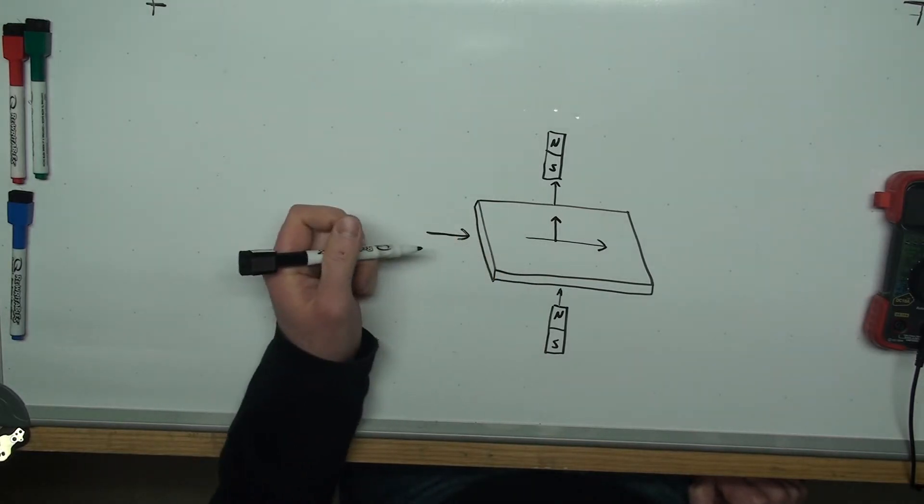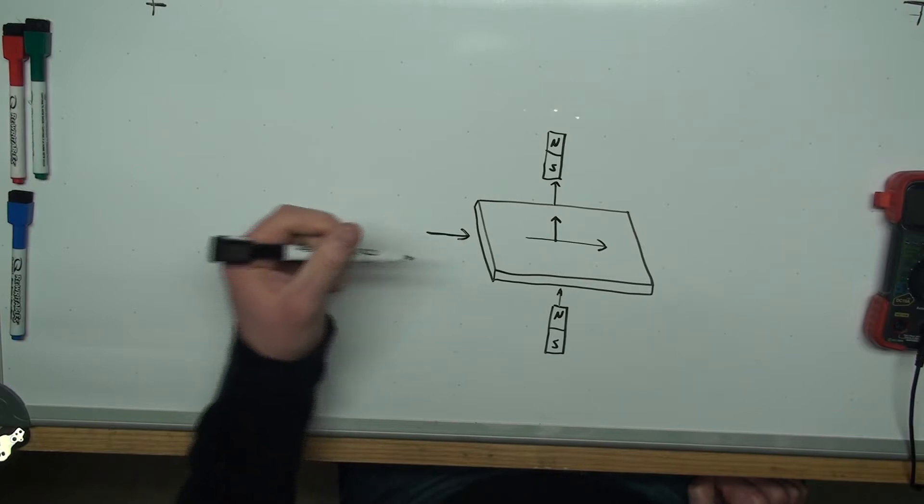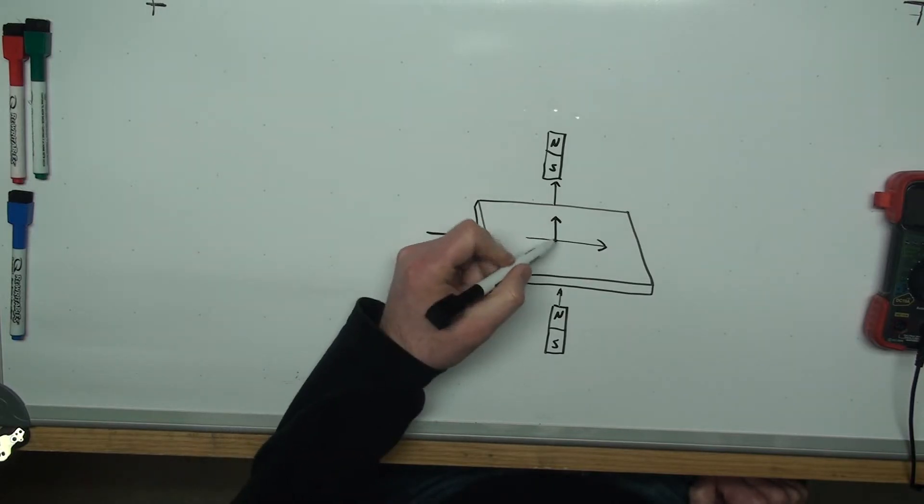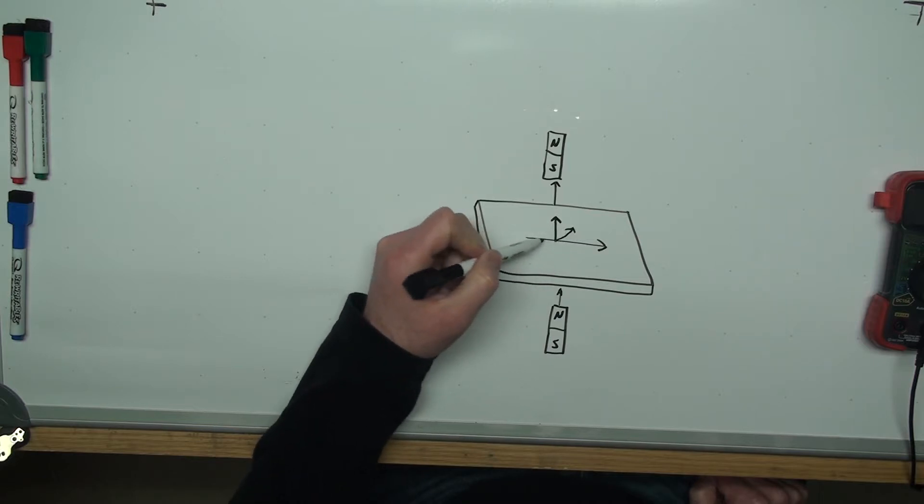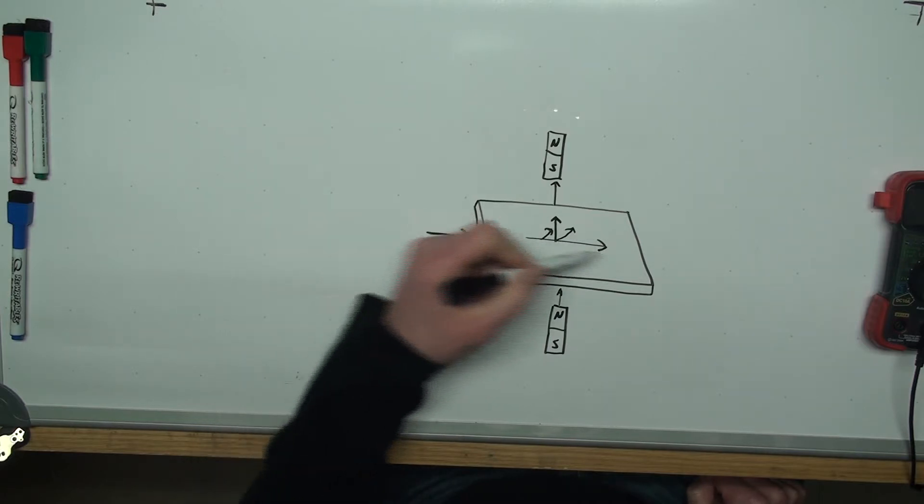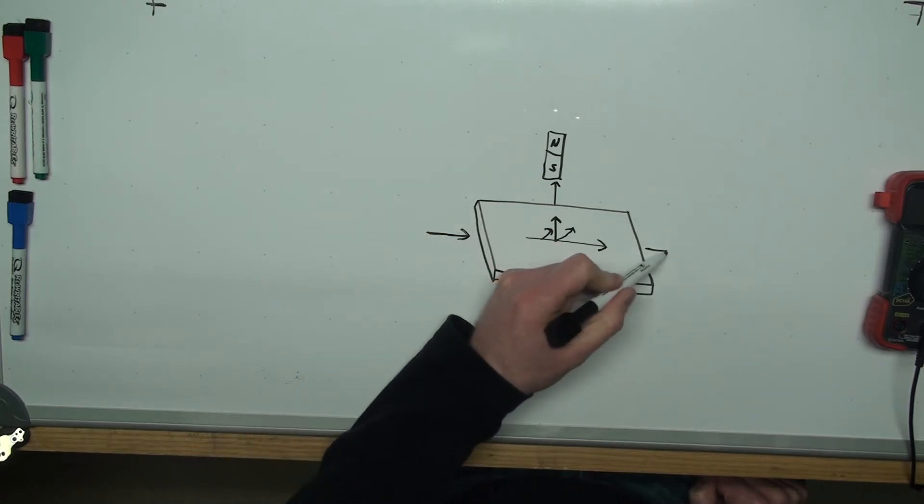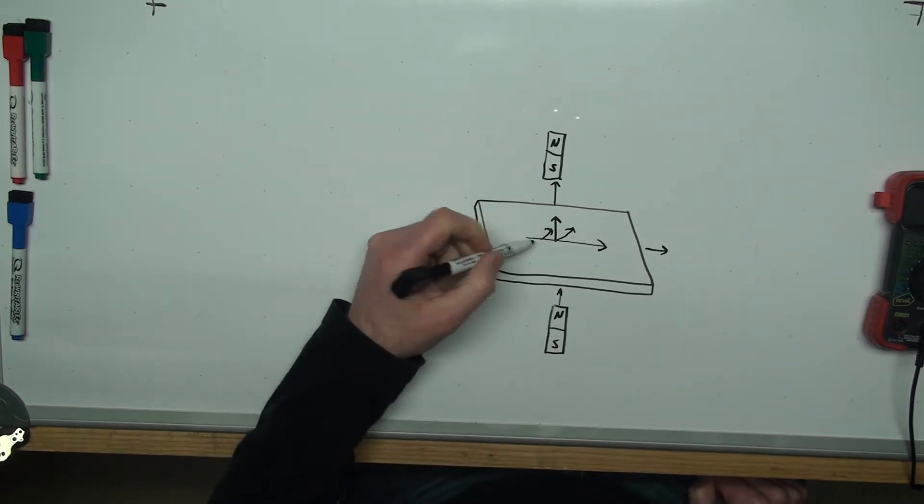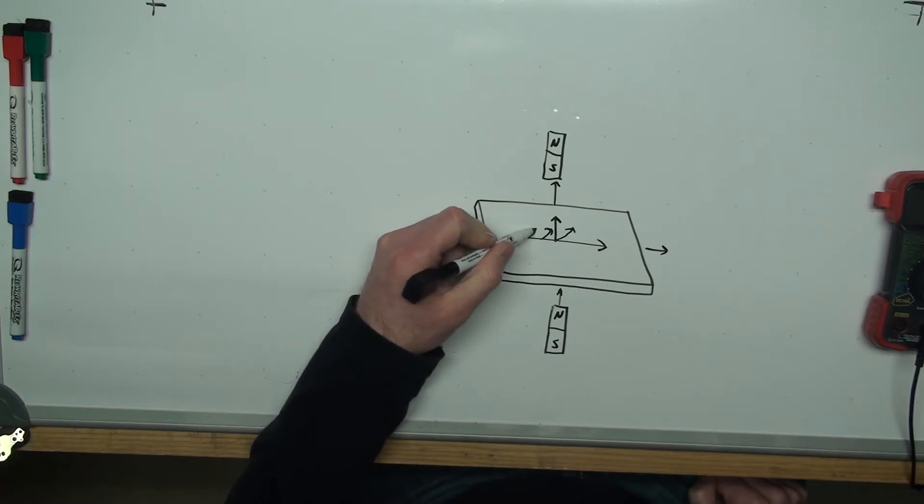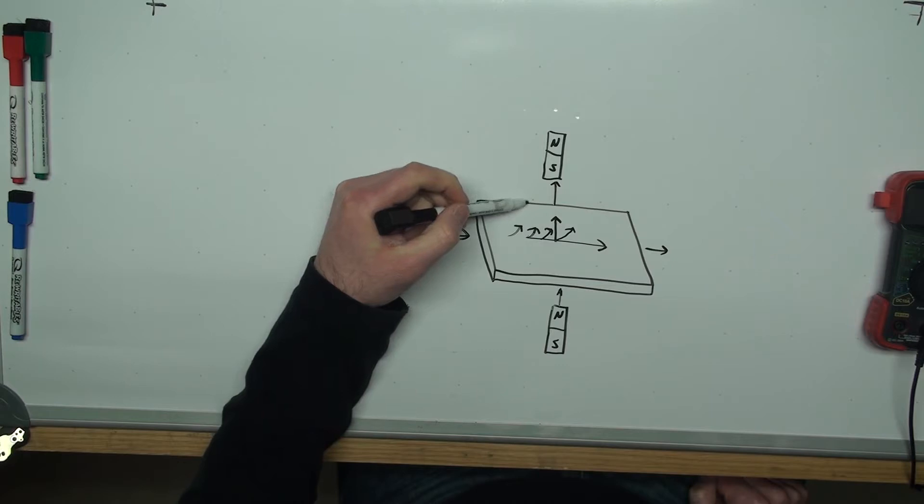Under these conditions you will have the charged particles being diverted away from this straight line path. Normally the electrons come in one side and exit out the other, and they do that, however there's some pressure pushing them off to this edge.